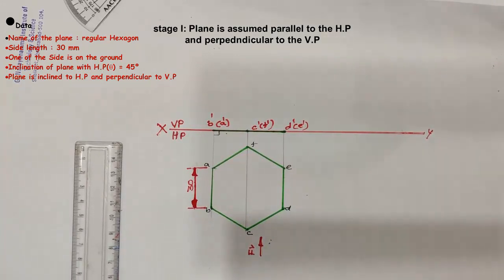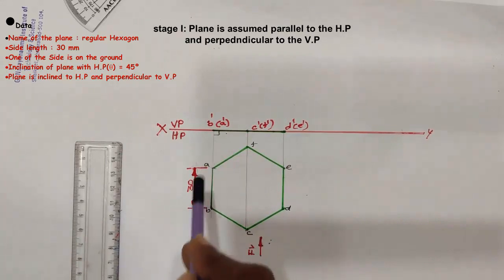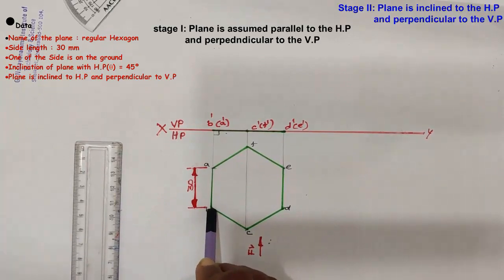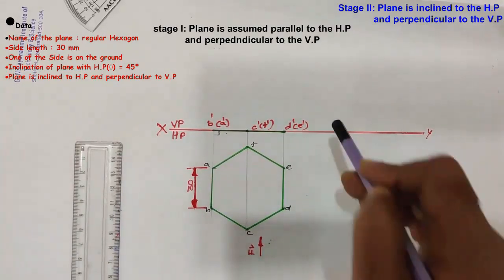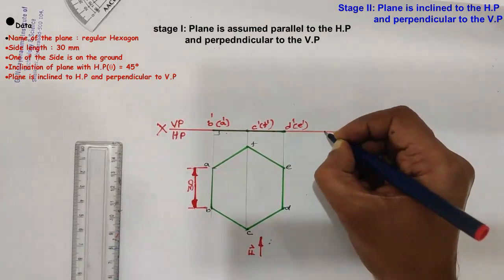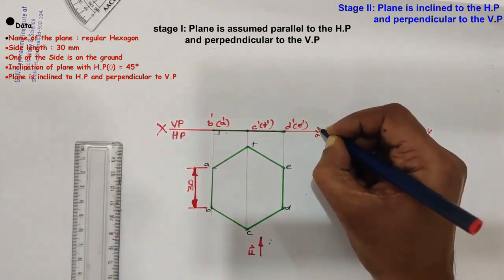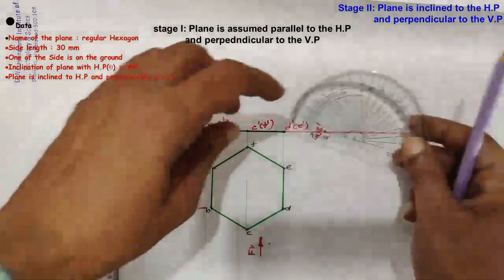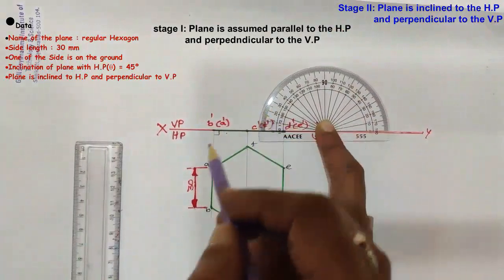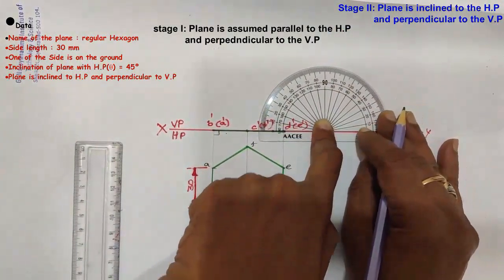In Stage 2, we consider the inclination of the hexagonal plane with the horizontal plane. The hexagonal plane rests on its side AB on HP while its surface makes an angle of 45 degrees to the HP. The image of side AB falls on the XY line in the front view. Because the plane makes 45 degrees to the HP, its front view line B'D' also makes an inclination of 45 degrees to the XY line.